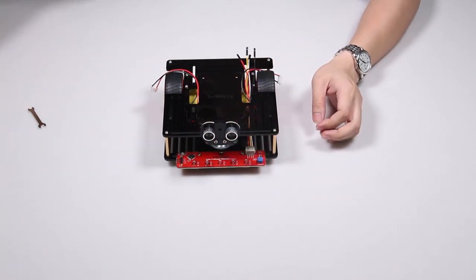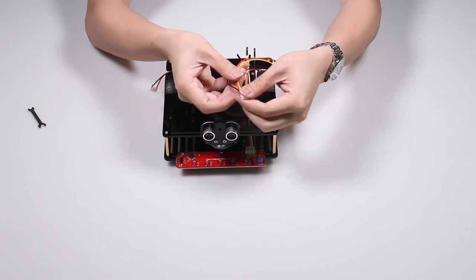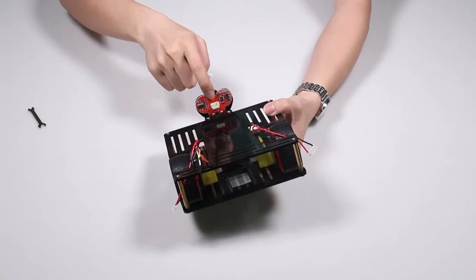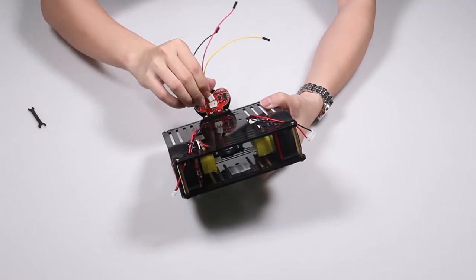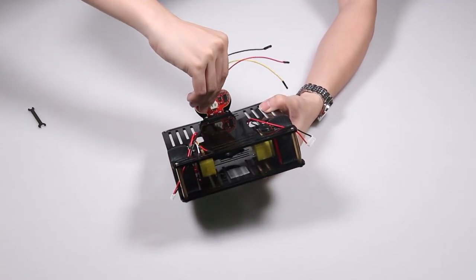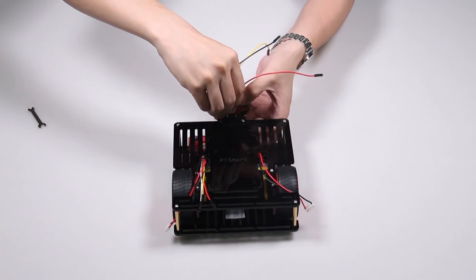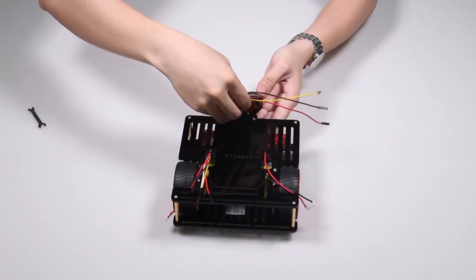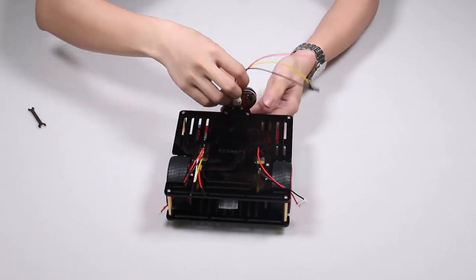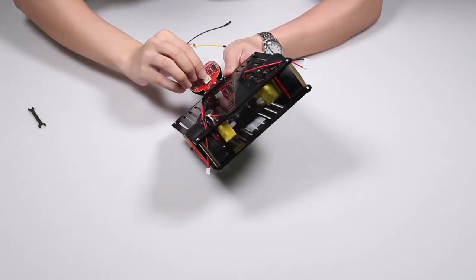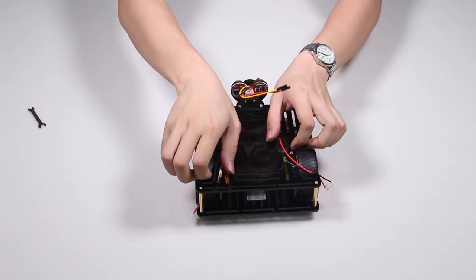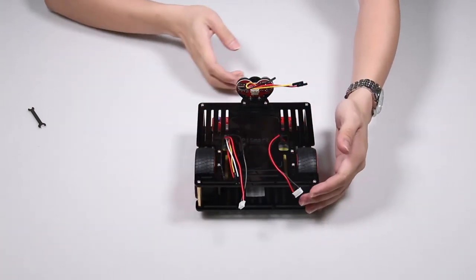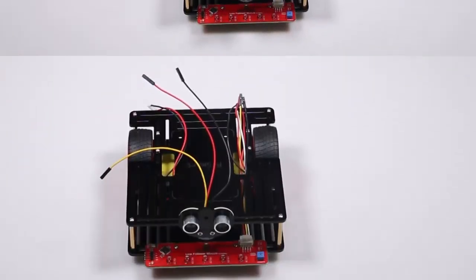Then take the 3-wire one and connect it behind the sensor like that. Carefully, don't break the acrylic. It's connected. Now the car is done. Cool.